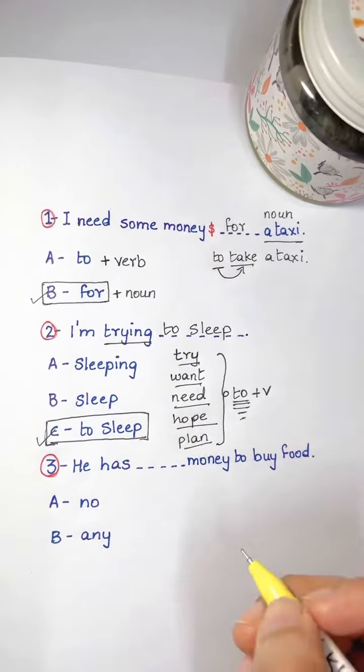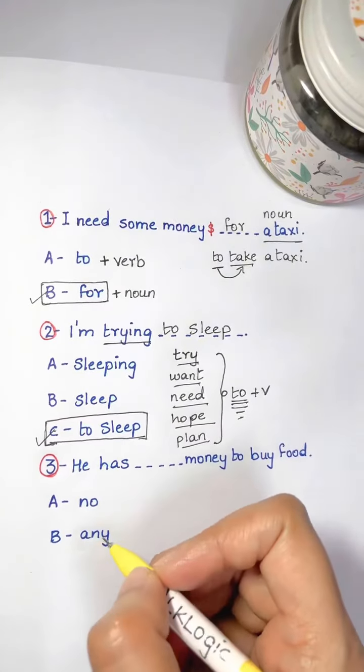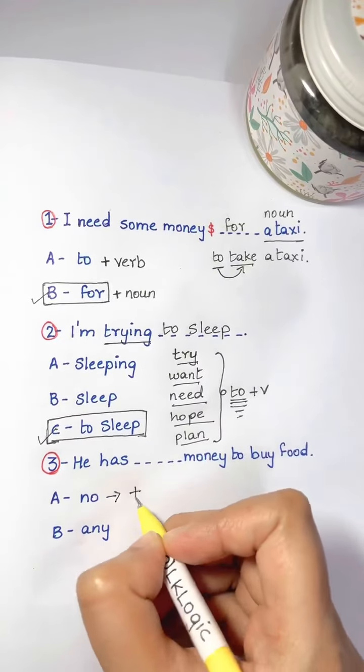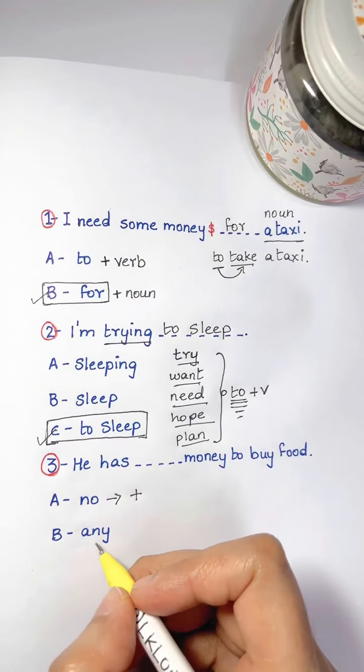He has dash money to buy food. No money, any money? Listen guys, no is a negative word but it comes in a positive sentence. The verb should be positive without not.